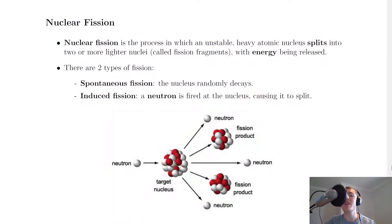Hey guys, welcome back. In this video we're going to look at nuclear fission, so let's get started. We're going to start with the definition of nuclear fission and then look at the two types. Nuclear fission is the process in which an unstable heavy atomic nucleus splits into two or more lighter nuclei, often called fission fragments, with energy being released.